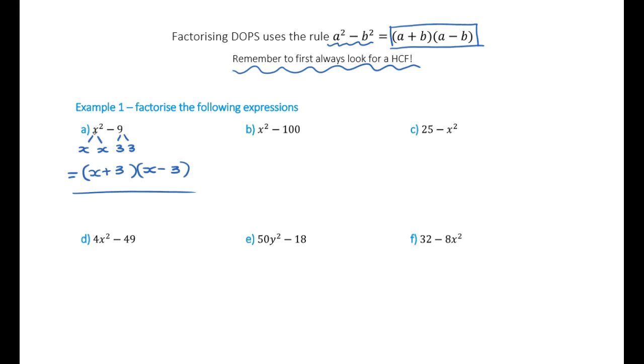At that time, I forgot to check whether we had a highest common factor here. X squared and nine, no, they don't have a factor in common. So let's check it for b, x squared, 100, there's no common factor we can take out there.